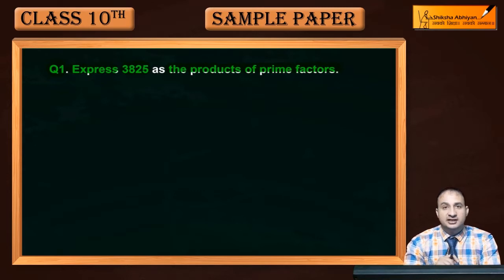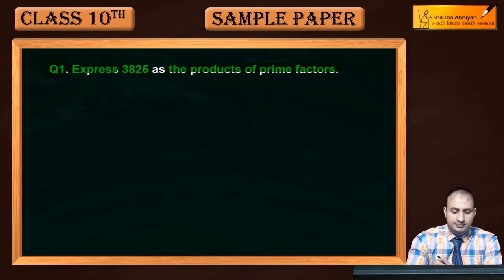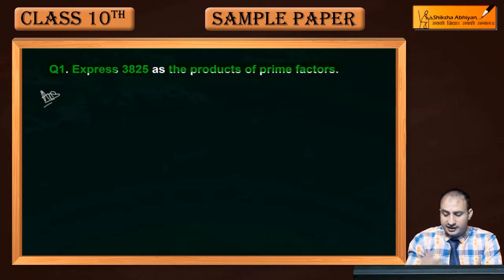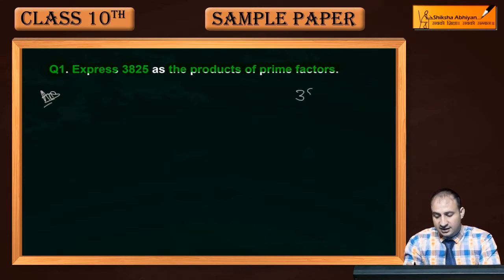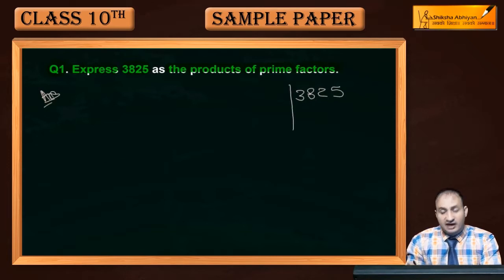3,825 के prime factors आप निकाल लिए और उसके according आपको write down करना है. तो मैं यहाँ पर find out करता हूँ तो पहले 3,825, since last में 5 है तो 5 से तो divide होगा, 5 से divide होने पर यह 765.